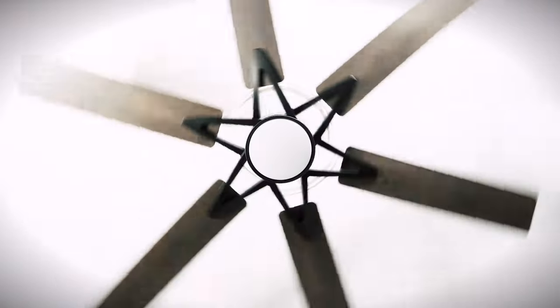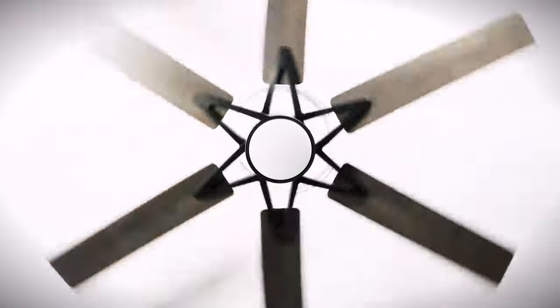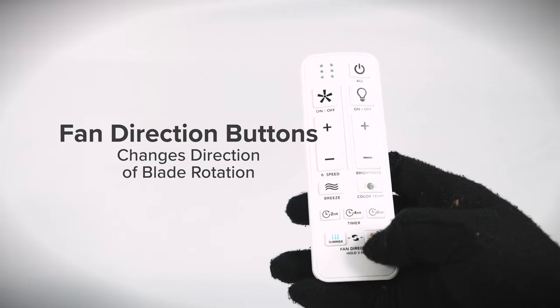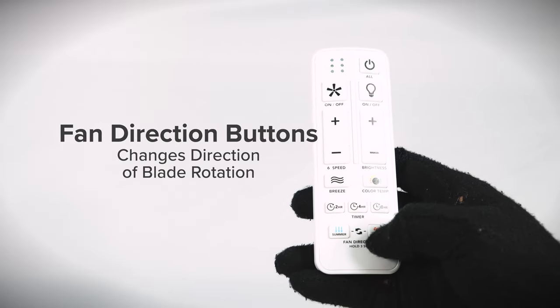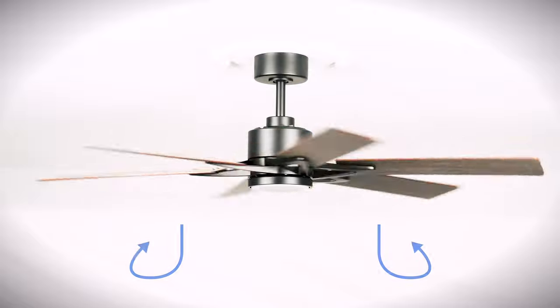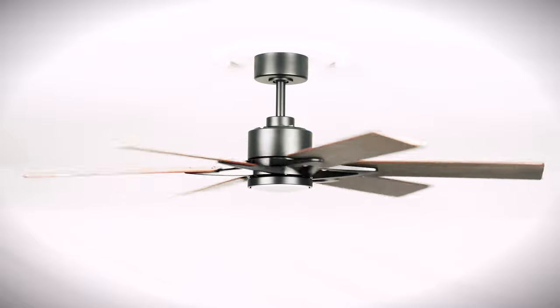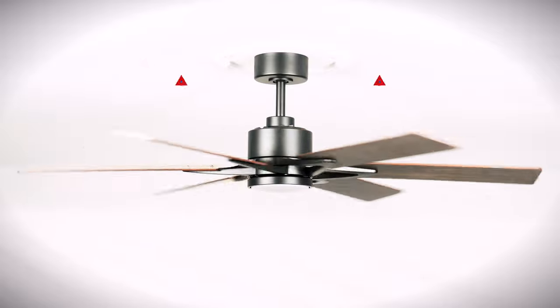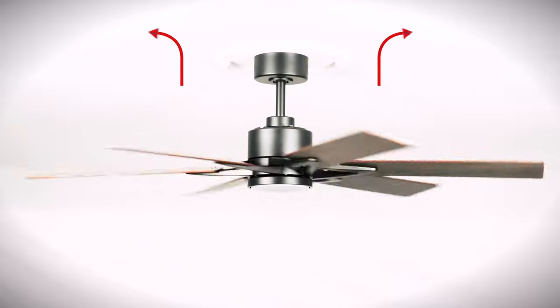With the fan running, press and hold the forward or reverse button for 3 seconds to change the direction of the blade rotation. For warm weather, the fan will spin counterclockwise to push air downward and produce a cooling effect. For cool weather, the fan will spin clockwise to cycle warm air off the ceiling.